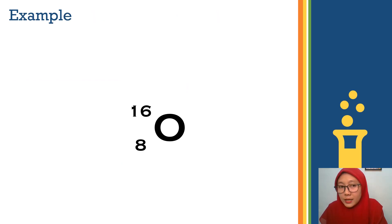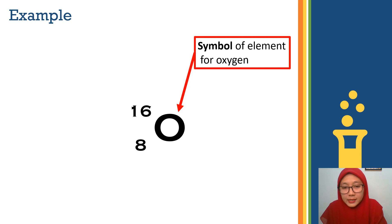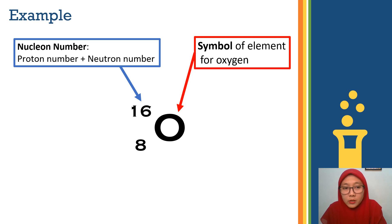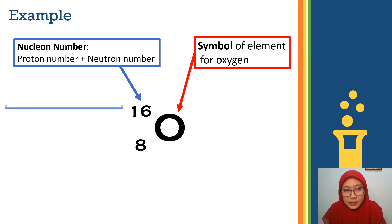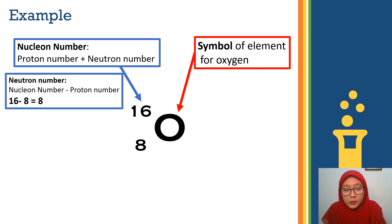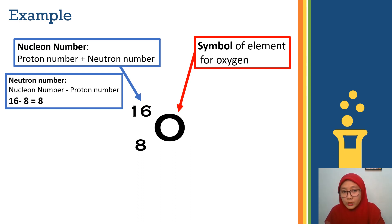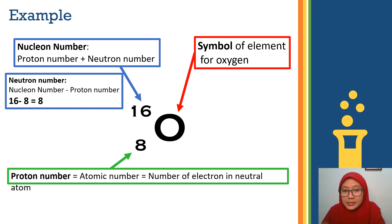Here is an example — we have the oxygen atom, written as O with 16 at the top and 8 at the bottom. O is the symbol of element for oxygen. The nuclear number is 16, which is the total number of protons and neutrons. The proton number is 8, at the bottom. The neutron number equals 16 minus 8. The proton number, atomic number, and the number of electrons in the neutral atom are all equal to 8.